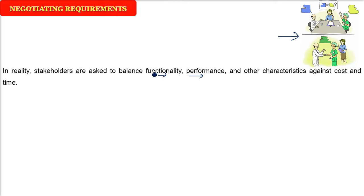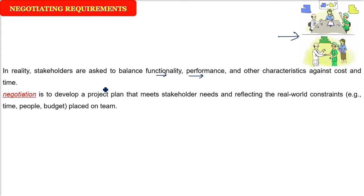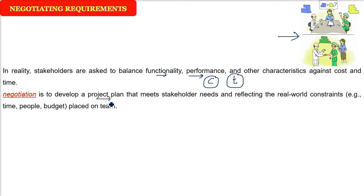But in reality, if you put yourself in your stakeholders' shoes, then you have to think about that also as a software engineer, as a requirement engineer. There are multiple parties involved. Every party should be in a win-win situation. Cost is there, time is involved, money is involved. The negotiation is all about developing the project plan that meets the stakeholders' needs.